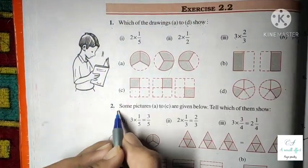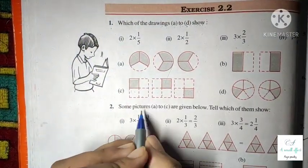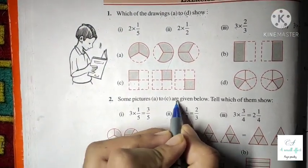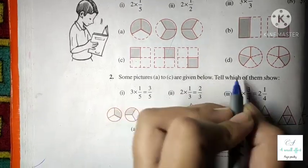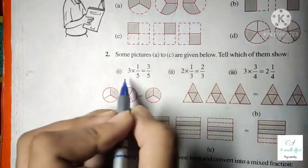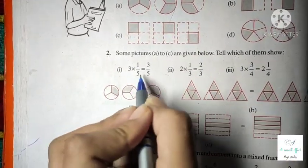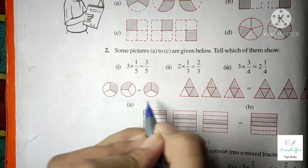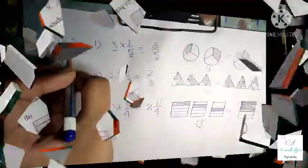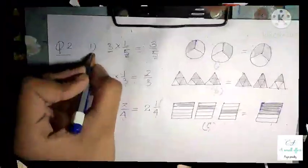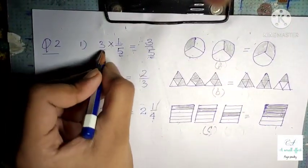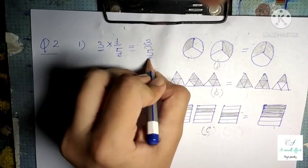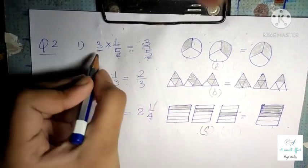Now let's move to Question 2. Some pictures A to C are given. We have to match the given fractions with the given figures. The first part is 3 × 1/5 = 3/5.